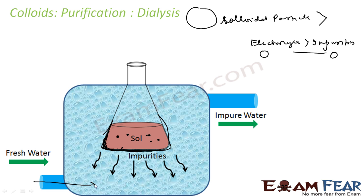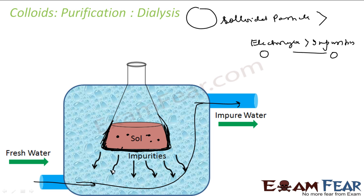Fresh water is passed continuously, and the impure water carrying impurities is taken away. Without running water, equilibrium is reached and impurities stop diffusing out. The colloidal sol is placed inside a bag made of a semi-permeable membrane. This membrane allows only smaller impurities and electrolytes to pass through, while the colloidal particles remain inside, giving you a pure colloidal solution.